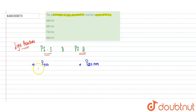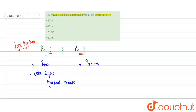Photosystem 1 is located on the outer surface of the thylakoid membrane of the chloroplast. While Photosystem 2 is present on the inner surface of the thylakoid membrane.